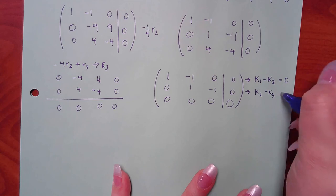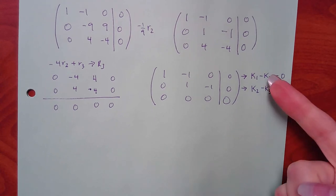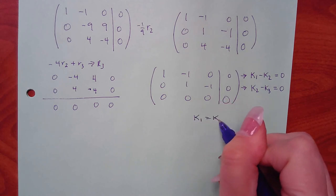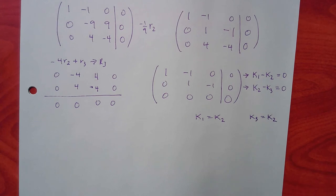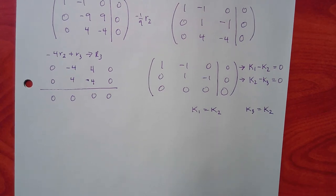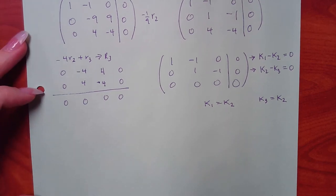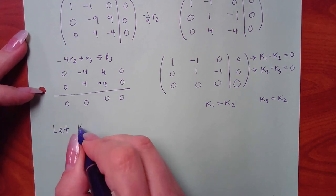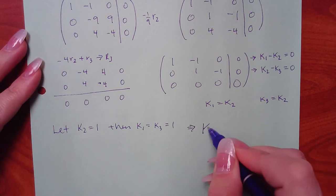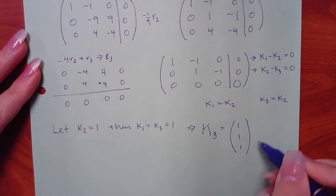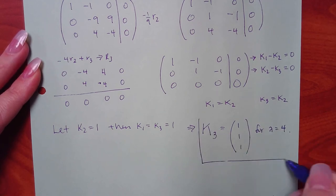The k-equations: k1 minus k2 equals zero, and k2 minus k3 equals zero. So k1 equals k2 and k3 equals k2. Can't use zero (makes all zero), no fractions, so let k2 equal 1. Then k1 and k3 also equal 1. Capital K3 = [1, 1, 1] for lambda equal to 4.